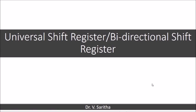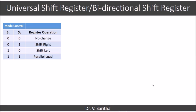In this video we are going to learn about universal shift register, or we can say bidirectional shift register. We call this a bidirectional shift register because it can perform both shifts, that is left shift and right shift. So four operations can be performed using this universal shift register: no change operation, shift right, shift left, and parallel load.